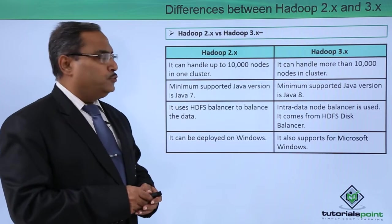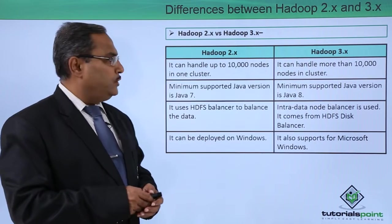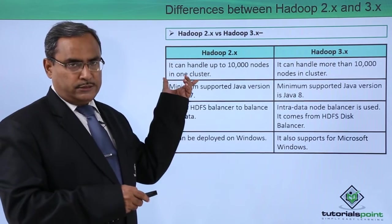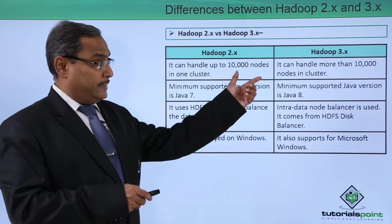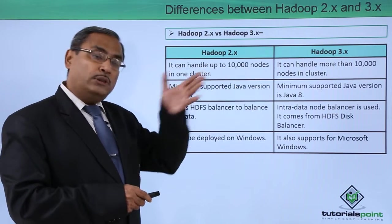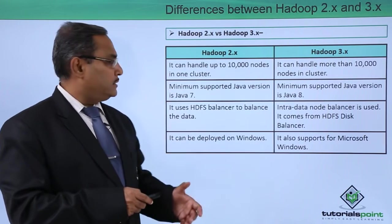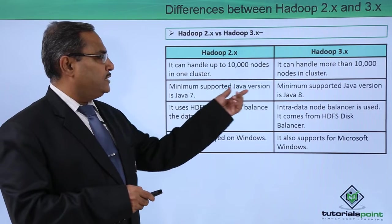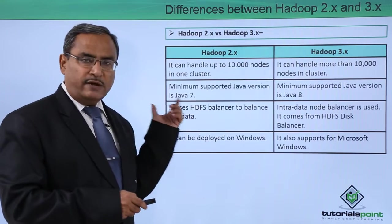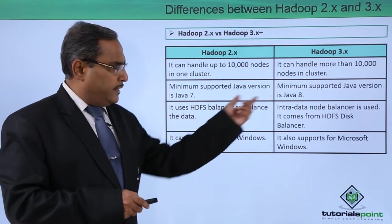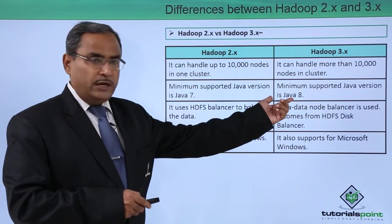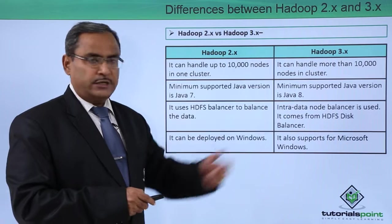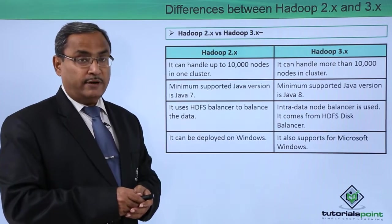Hadoop 2.x can handle up to 10,000 nodes in one cluster, while Hadoop 3.x can handle more than 10,000 nodes per cluster. The minimum supported Java version in Hadoop 2.x is Java 7, whereas Hadoop 3.x requires a minimum of Java 8.